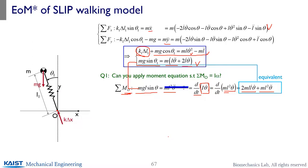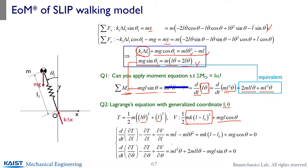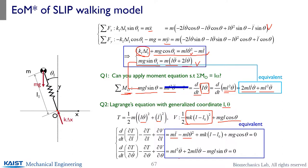Using Lagrange's equation instead: the generalized coordinates are theta and L. Kinetic energy is proportional to L²·theta-dot² plus L-dot². Potential energy includes both gravitational and spring potential energy. Plugging into the Lagrangian formula gives two sets of equations of motion: one involving L-double-dot and centripetal acceleration, and one involving theta-double-dot and Coriolis acceleration — equivalent to the Newton's law results.